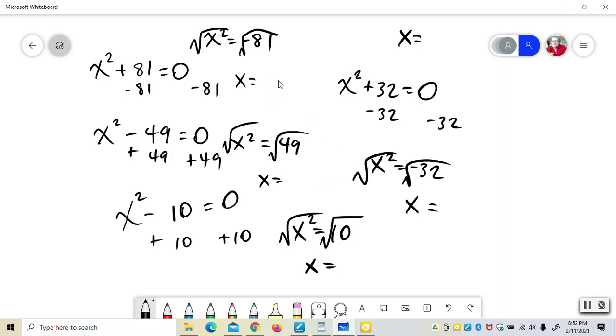For x squared equals negative 81, the square root of 81 is 9, and it's plus or minus. Since the radicand is negative, it has to be 9i. For x squared equals 49, the square root is positive, no need for i's. Square root of 49 is 7, but you always want to be plus or minus.